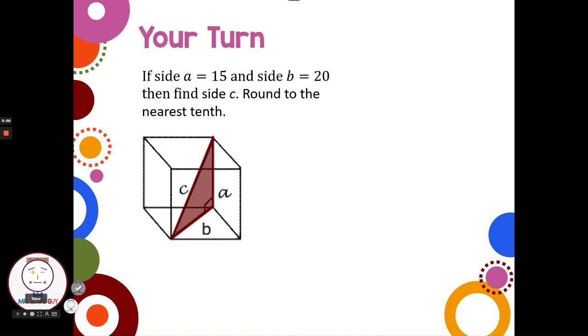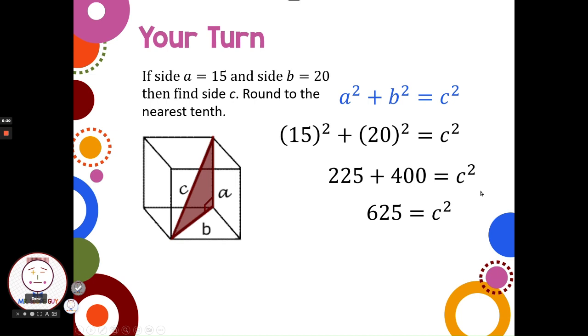You guys try this one on your own. Pause the video here. Find the length of c. All right, welcome back. We're starting each of these problems with writing the Pythagorean Theorem, a squared plus b squared equals c squared. We had sides of 15 and 20. And since they gave us a was 15, I'd put a in for 15, and b was 20, put in b for 20. Square each, add, and then take the square root of each side. And we get that c is 25.